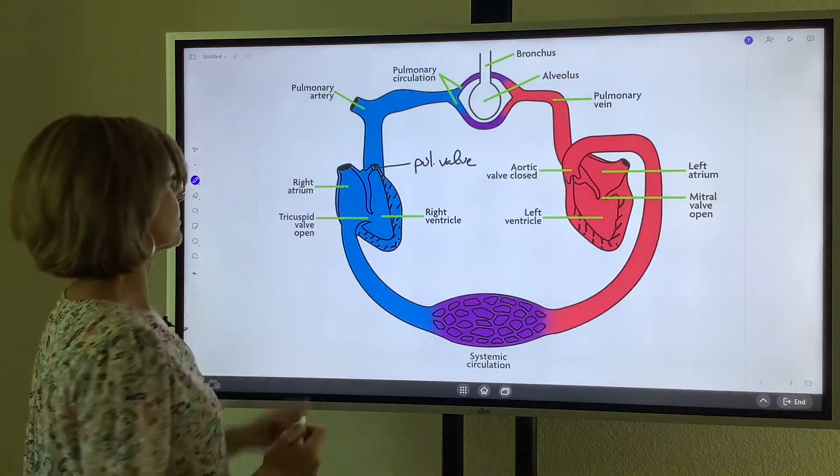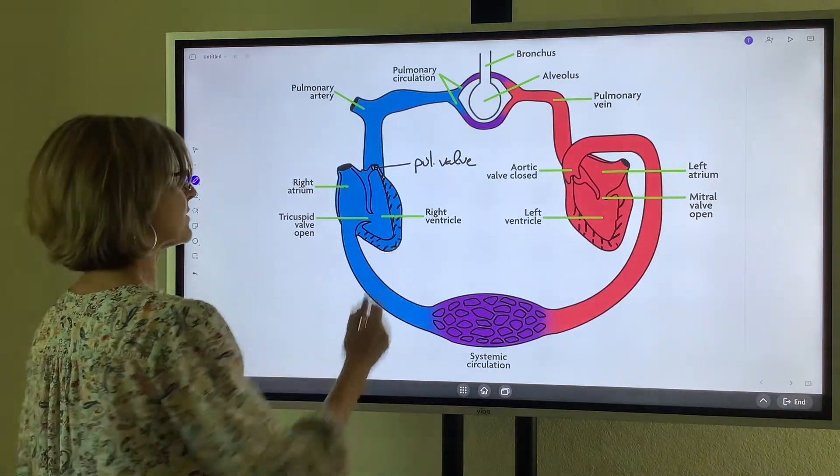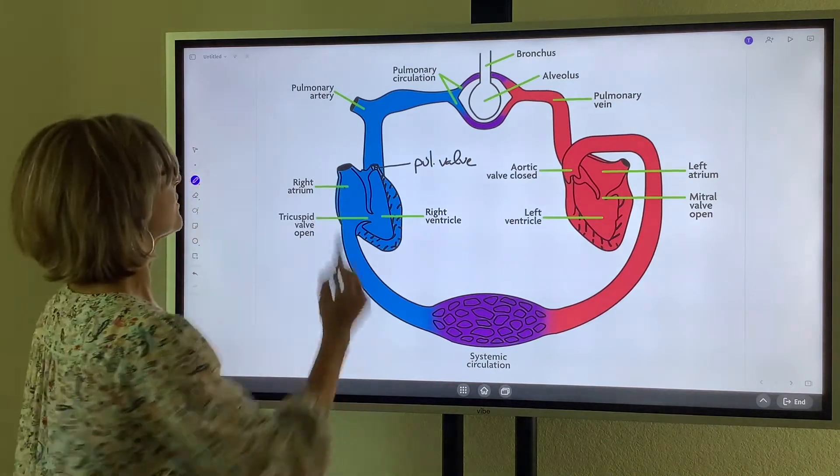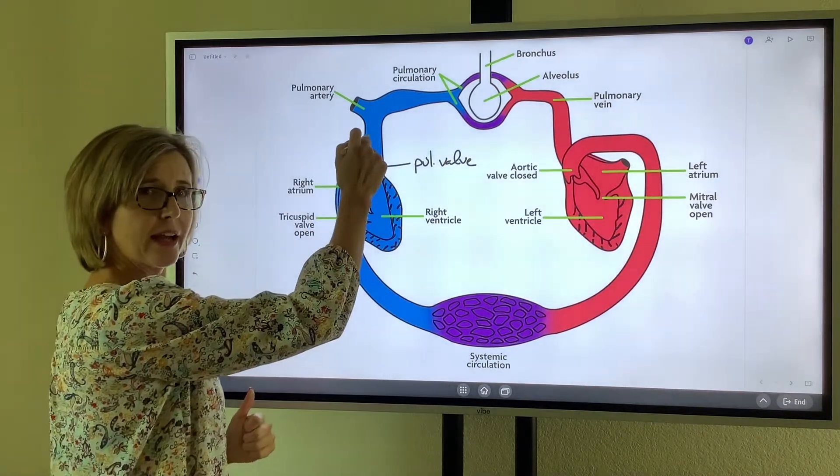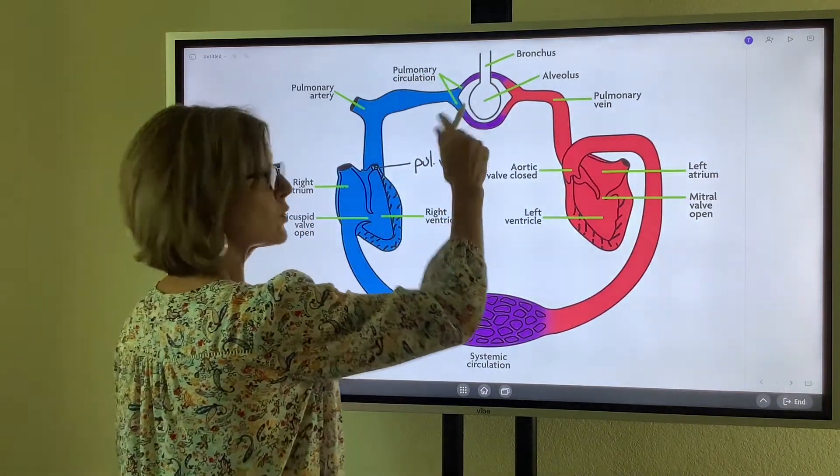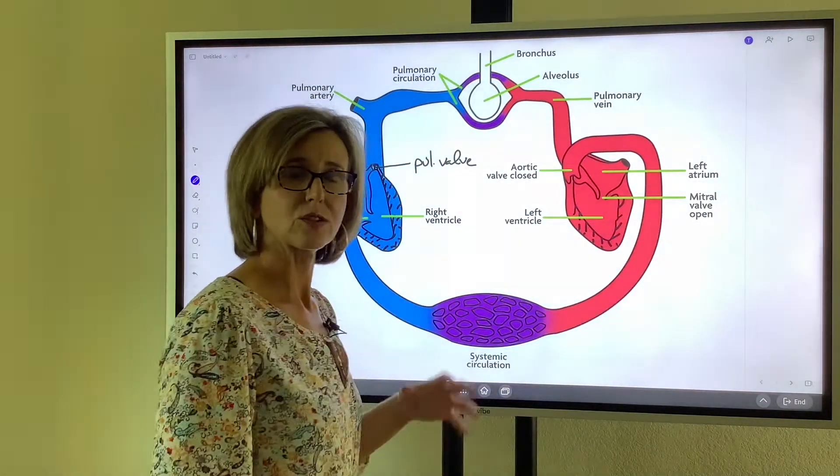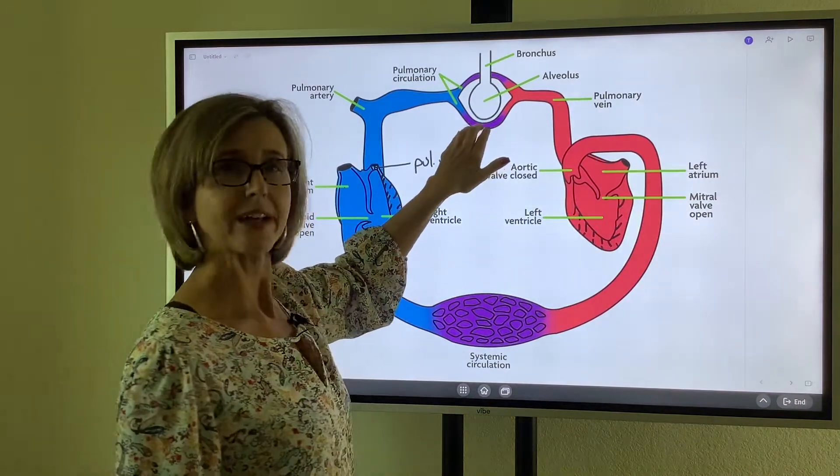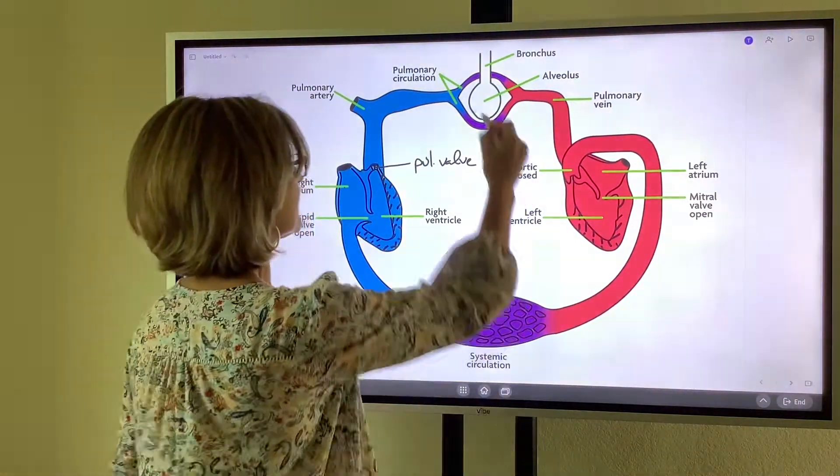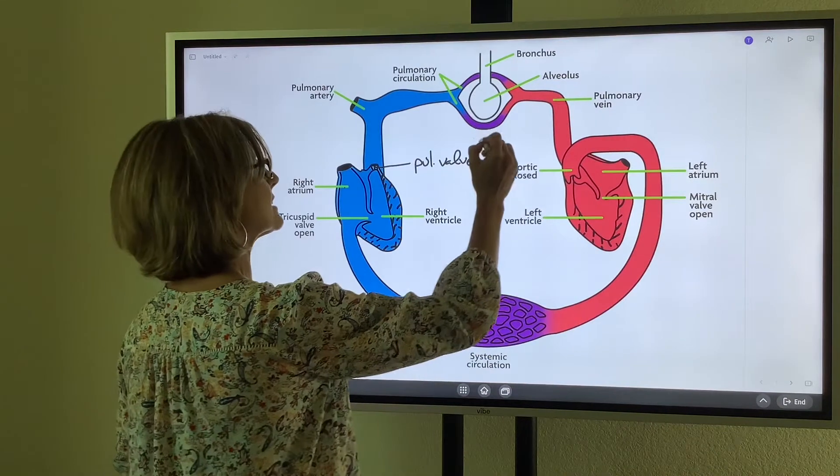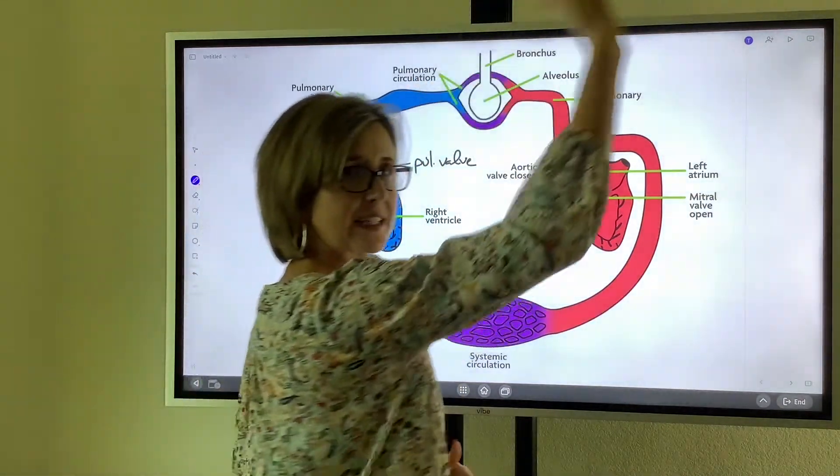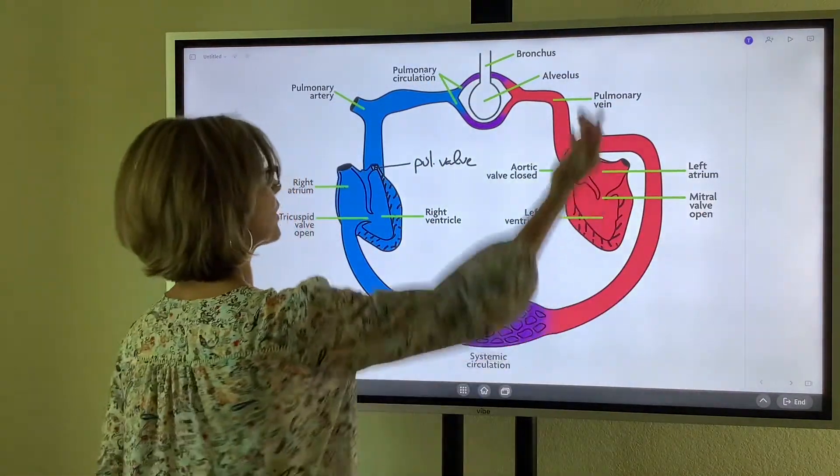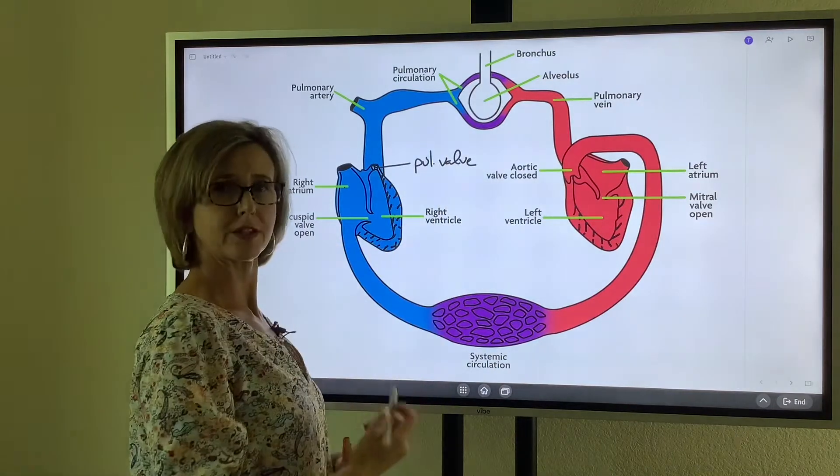Blood goes into the right atrium, through the tricuspid valve, to the right ventricle, up through the pulmonary valve, into the pulmonary artery, and then it moves to the right and left lungs. Those arteries get smaller and smaller until you eventually have a pulmonary capillary bed. It is at this area that CO2 is dropped off and exhaled out into the atmosphere and O2 is brought into the bloodstream.